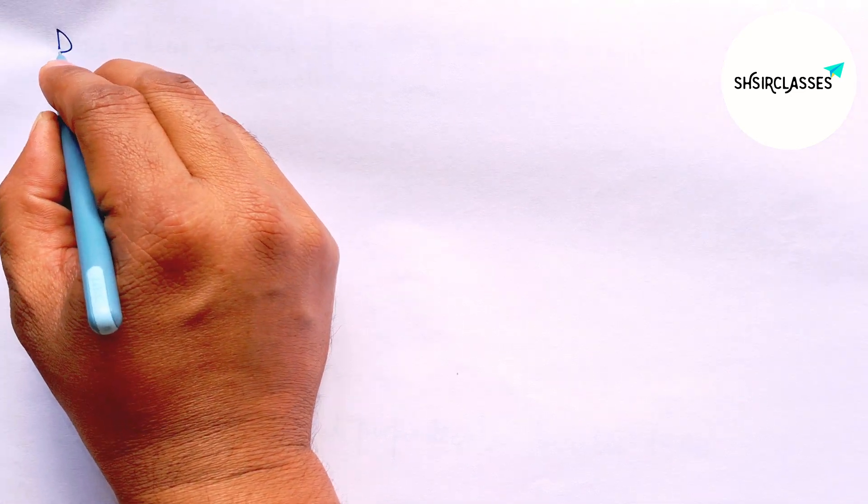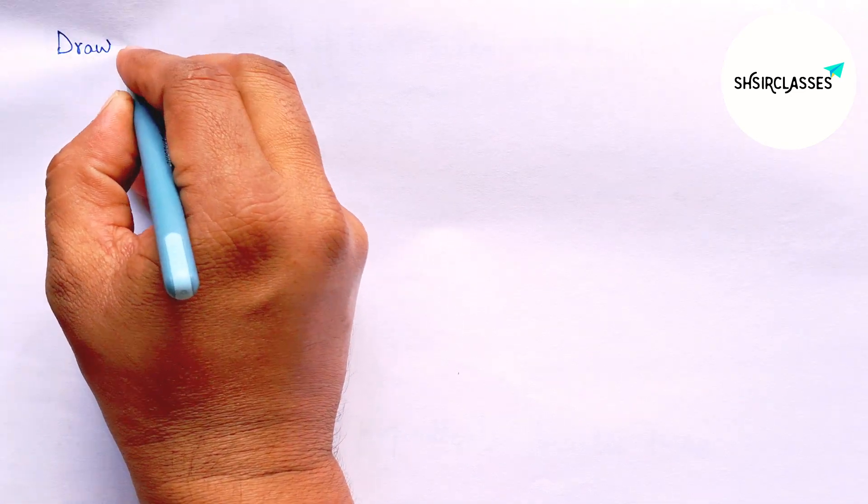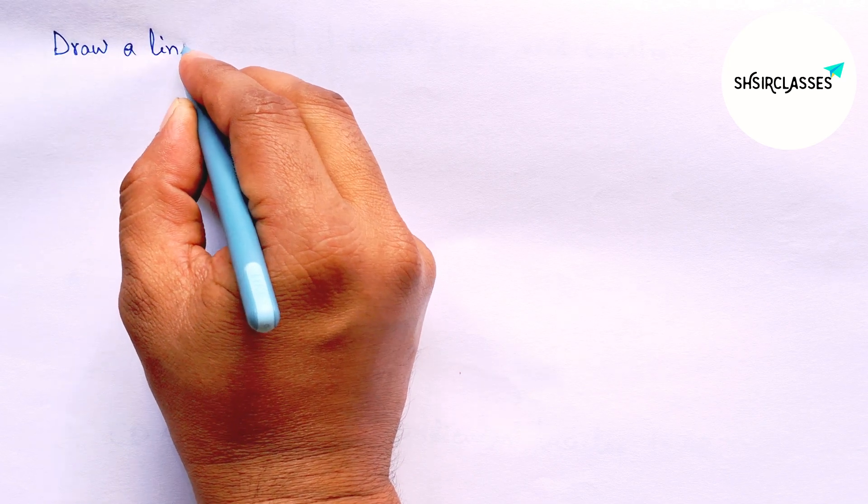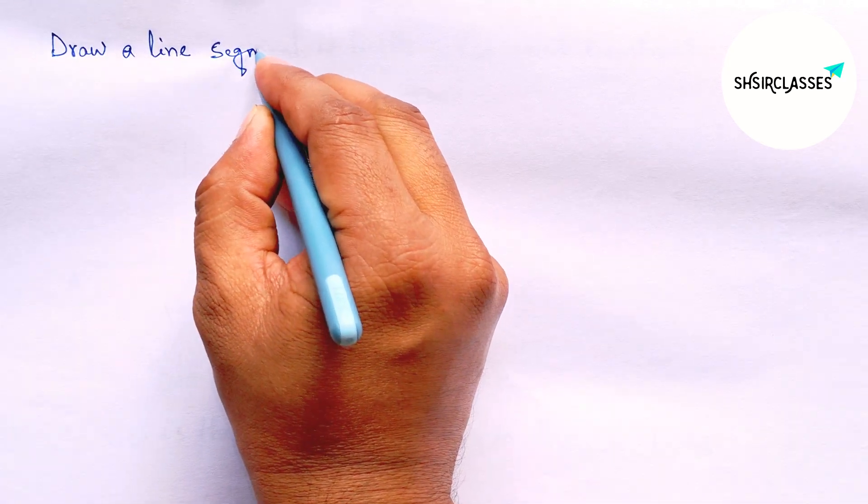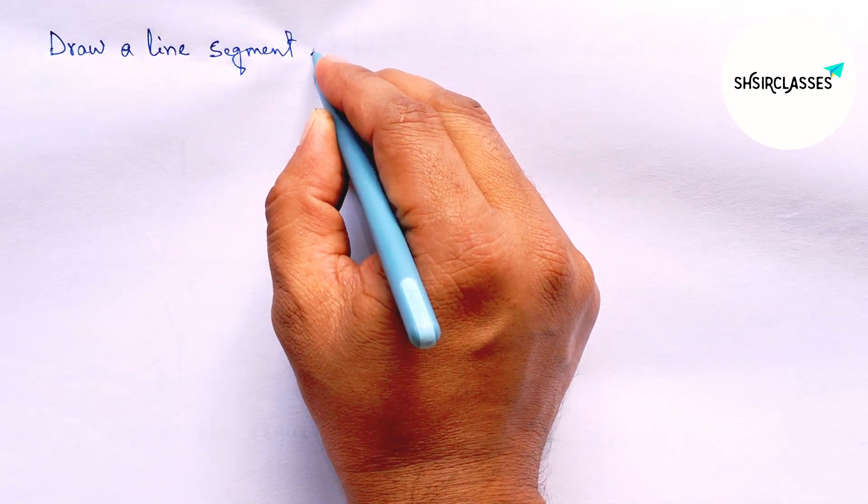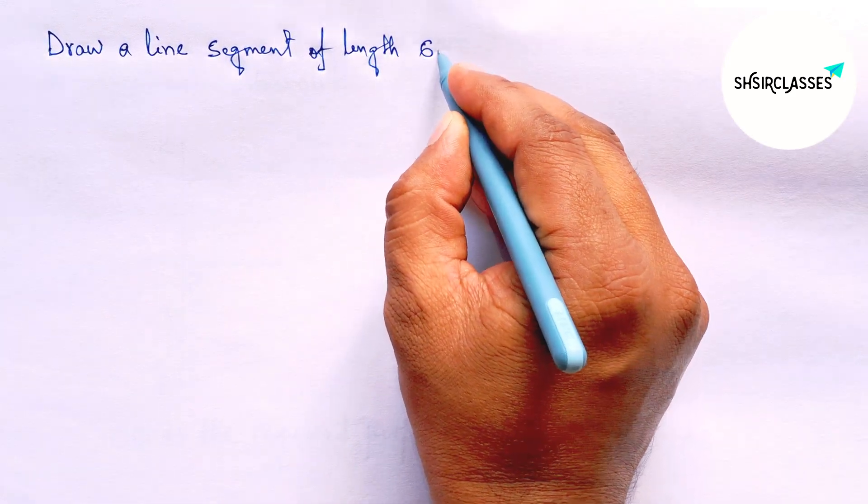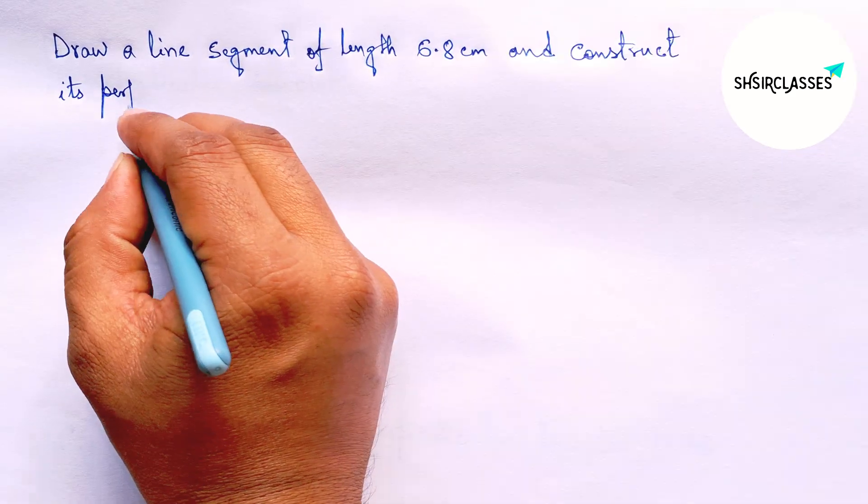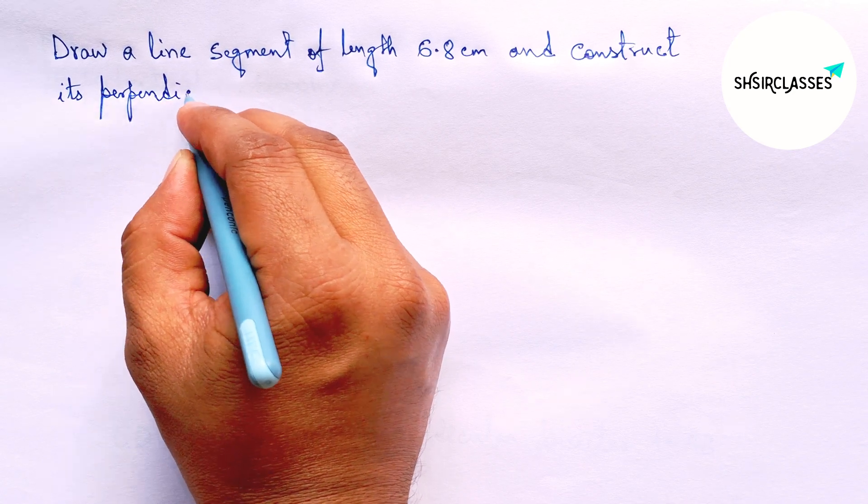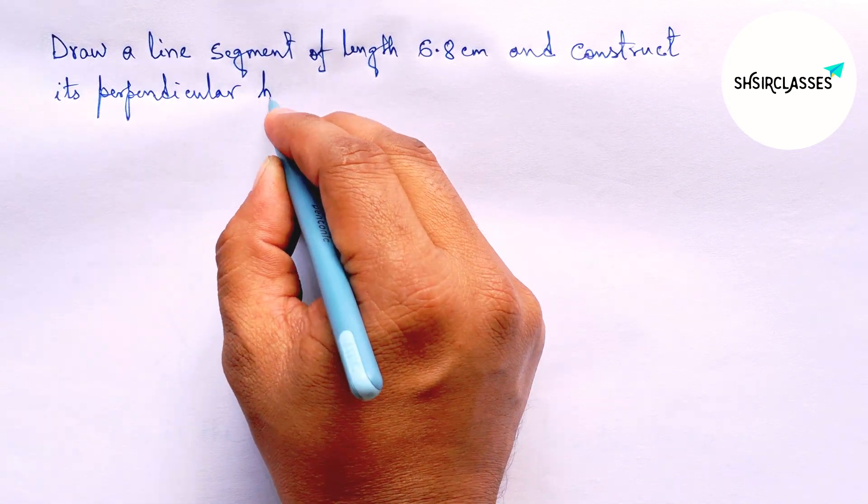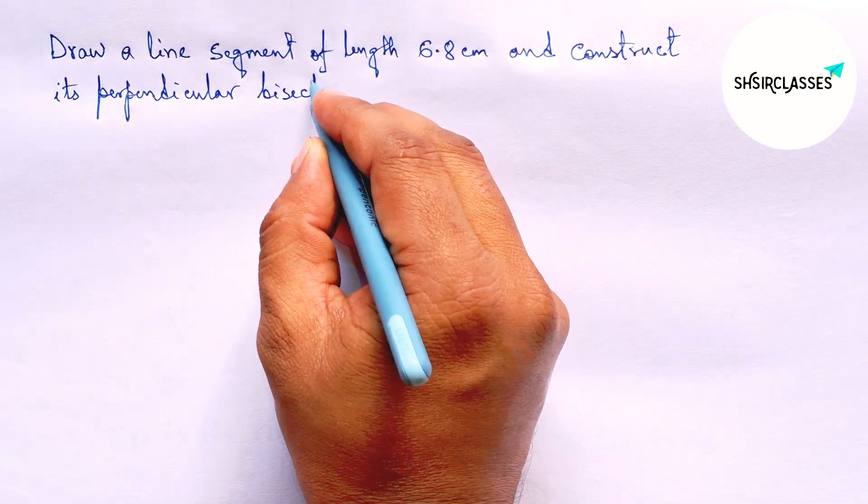Hi everyone, welcome to SH Sir Classes. Today in this video, draw a line segment of length 6.8 cm and construct its perpendicular bisector to the given line in easy way. So let's start the video.